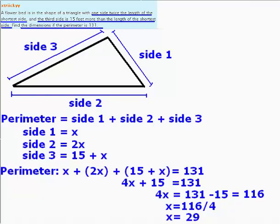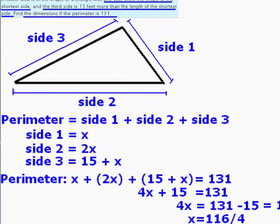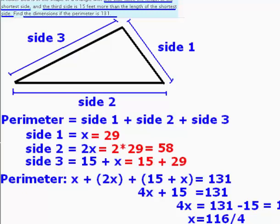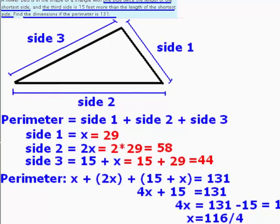We can now use this value to calculate the dimensions of the three sides. Side 1 equals X and we now know it is equal to 29. Therefore, side 2 which is equal to 2X must equal 2 times 29 which is simply equal to 58. And side 3 which is equal to 15 plus X is equal to 15 plus 29 which is simply 44.